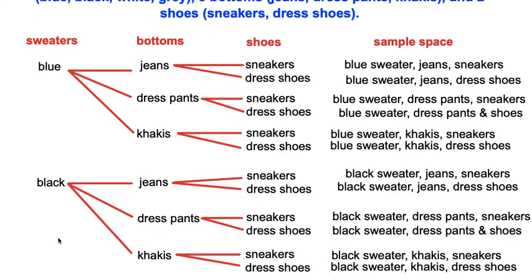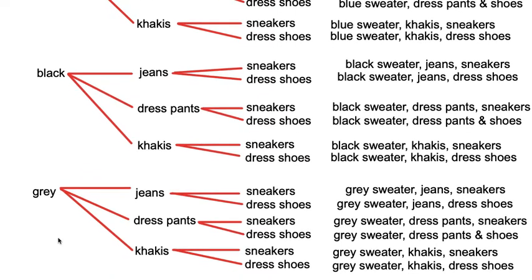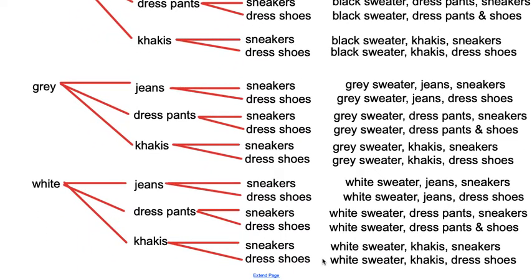He also has a gray sweater choice, and in the sample space, he can also create six different outfits with the gray sweater. Last but not least, he has a white sweater that he can choose from, and in the sample space you will see that he has six different outfits he can choose just by selecting the white sweater.